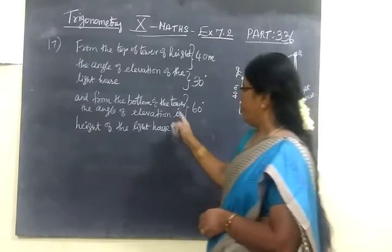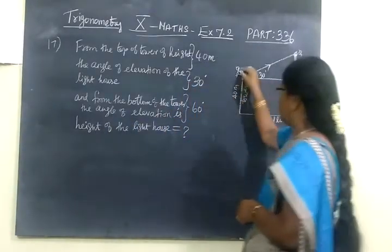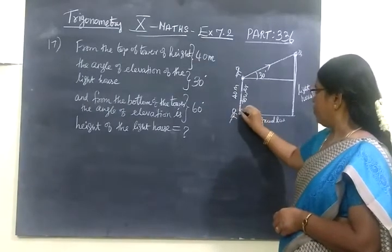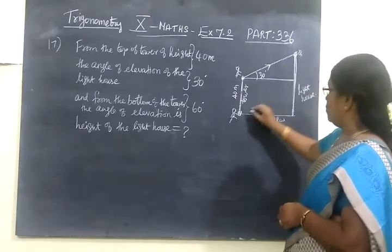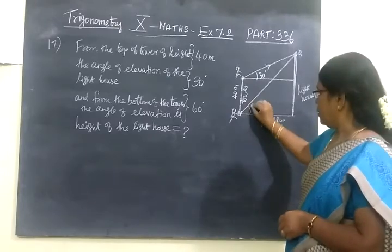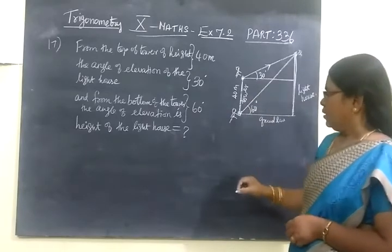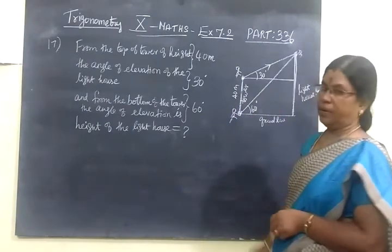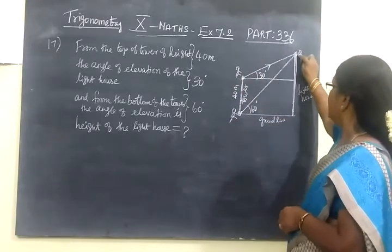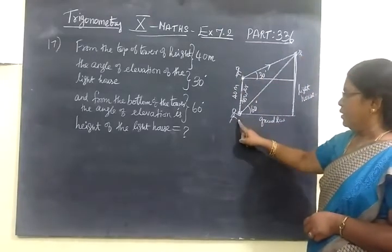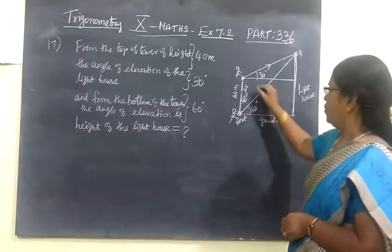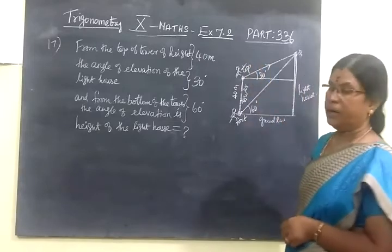Then from the foot of the tower, the man is coming down. From the foot of the tower, he is observing the same lighthouse and joining the line of sight. So this angle is 60 degrees — the angle of elevation is 60 degrees. The same person was sitting on top observing the lighthouse, and again he is observing from the foot of the tower. This is the top of the tower.